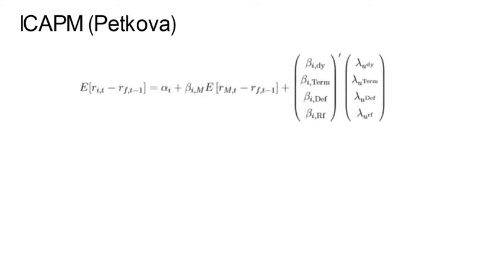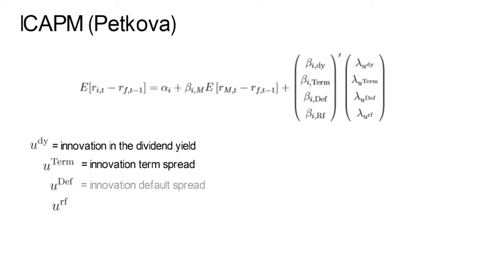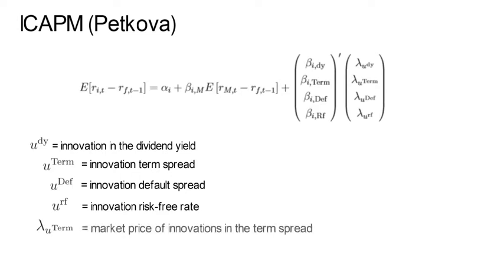Petkova's JF publication in 2006 uses the following ICAP-M characterization. Now, the terms u, like u^DY, u^TERM, u^DEF and u^RF, stand for innovations in the dividend yield, innovations in the term spread, innovations in the default spread and innovations in the risk-free rate. The term lambda, for example lambda^TERM, stands for the market price for innovations in the term spread. The respective beta coefficient, like for example beta_i^TERM, stands for the factor exposure that asset i has with regard to the term innovation risk factor.